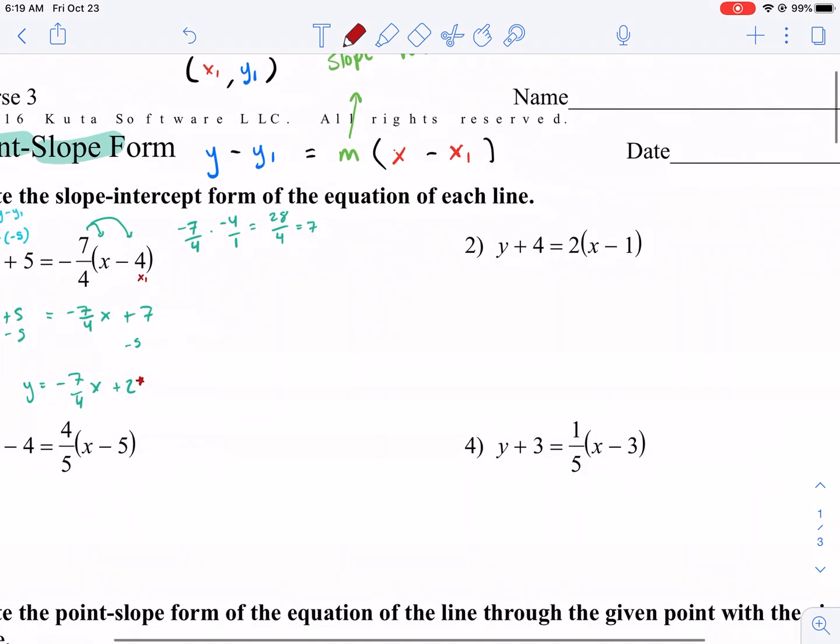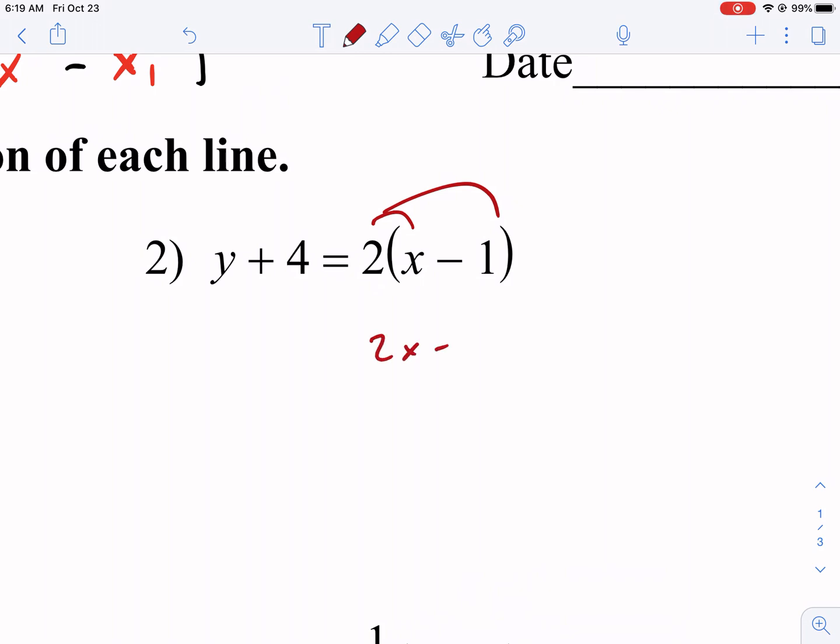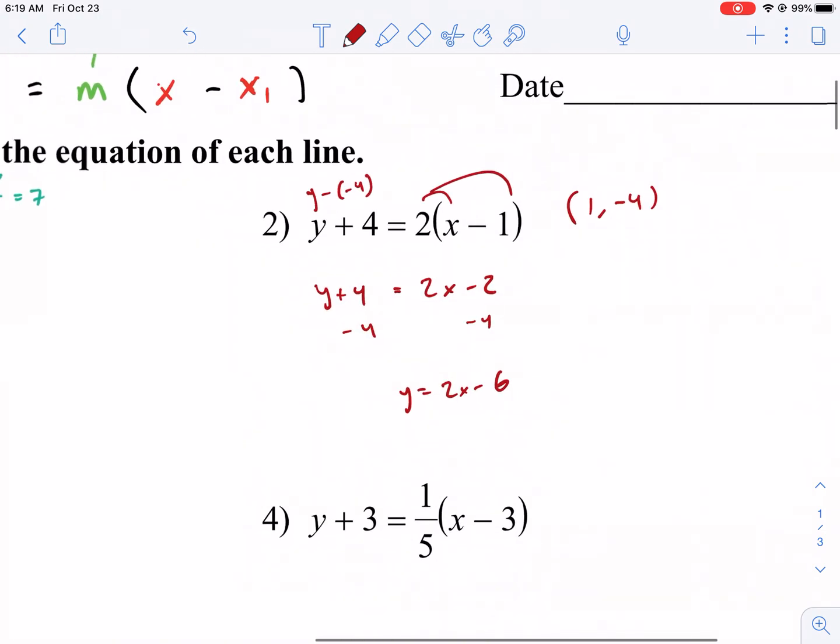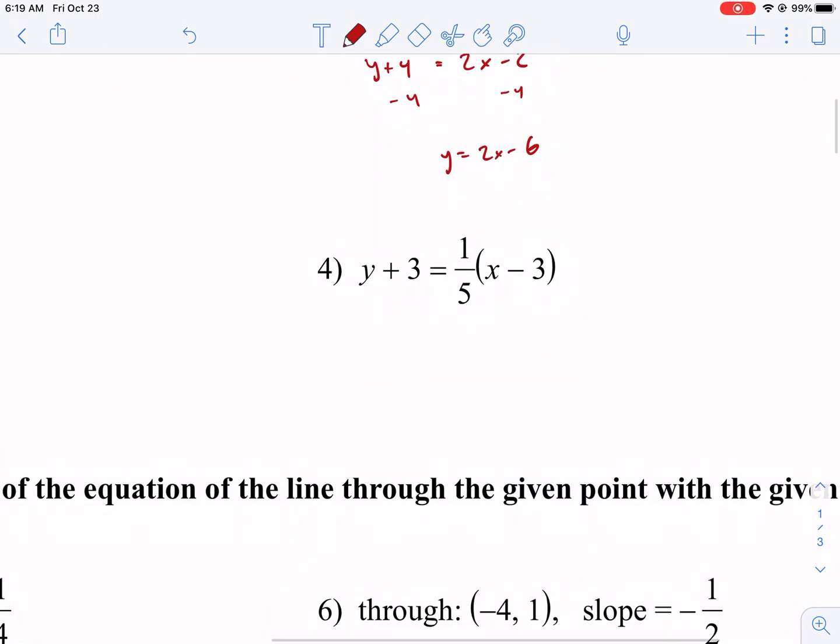These other ones are fairly easy to convert. For example, let me do this one quick. You would distribute 2x minus 2 equals y plus 4. Then you subtract 4 from both sides to get y equals 2x minus 6. So we get our y-intercept pretty quickly. If we were to get our point, it would be 1, negative 4. Again, y minus a negative 4. I'm going quickly because this is not the emphasis. It will be later, but I just wanted to get to some tougher problems.